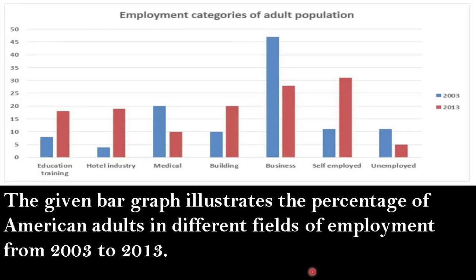Let's begin the intro. The given bar graph illustrates the percentage of American adults in different fields of employment from 2003 to 2013.